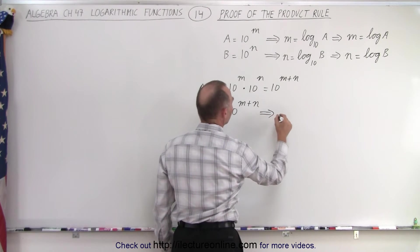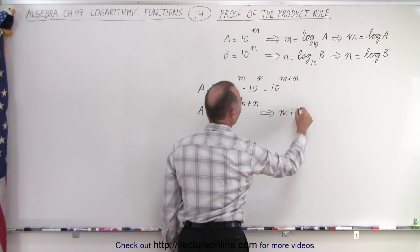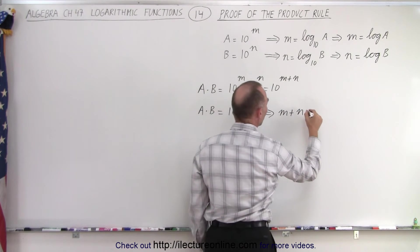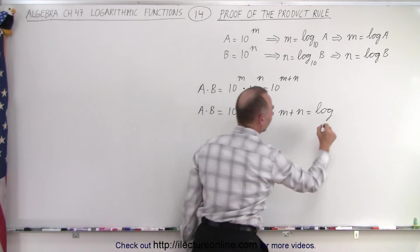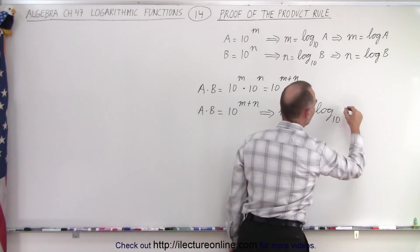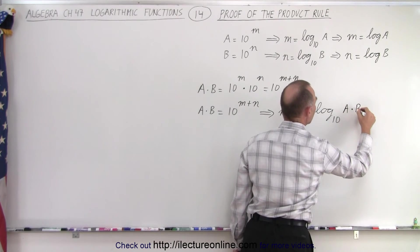So this can then be written as m plus n, we take the exponent, which is equal to the log of the base 10 of what we have over here, which is A times B.